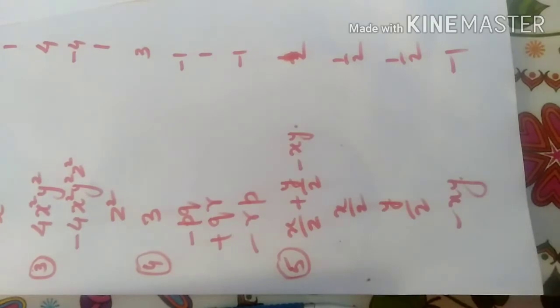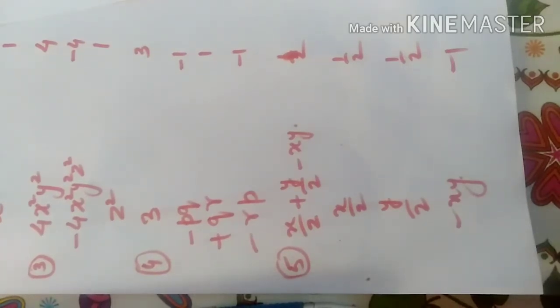The next one X by 2 plus Y by 2 minus XY. The three terms are X by 2, Y by 2 and minus XY. And the corresponding coefficients are half, half and minus 1.